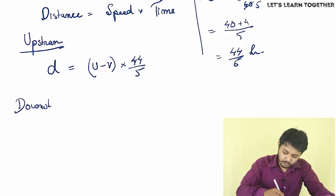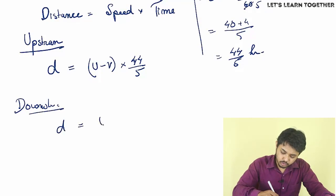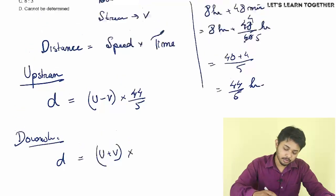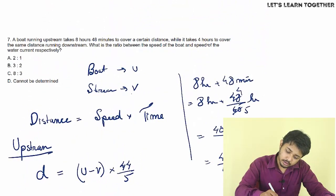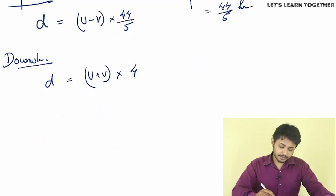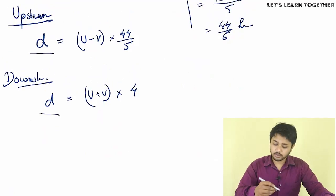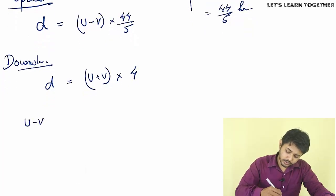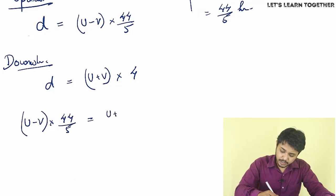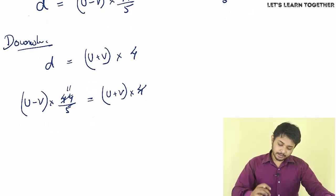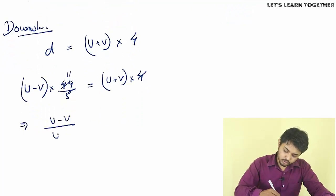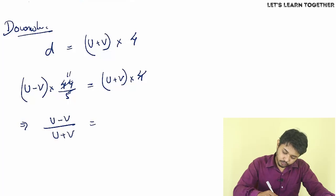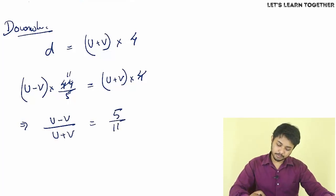Downstream is simpler: U plus V into 4 hours equals the same distance. Setting the two distance equations equal: U minus V into 44 by 5 equals U plus V into 4. Simplifying gives U minus V by U plus V equal to 5 by 11.